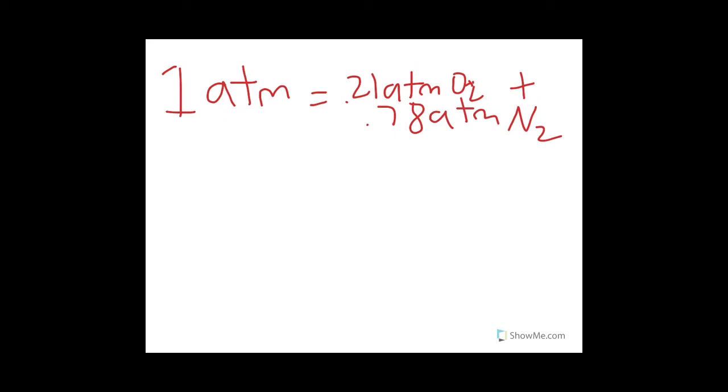So instead of it being 0.21 atm at the peak, it will be 0.21 times one-third because the pressure is one-third less up there, or about 0.07 atm.